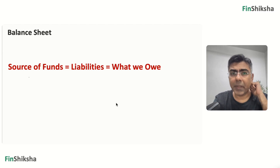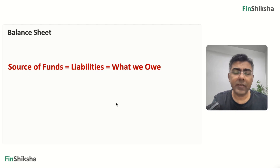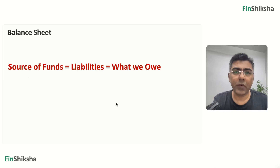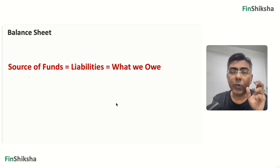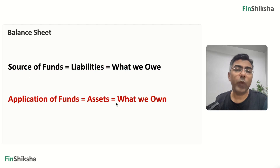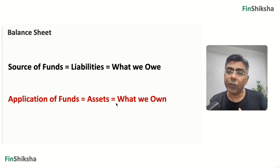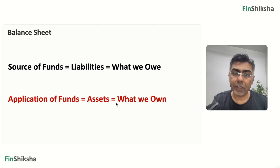The two sides of the balance sheet are typically liabilities and assets. Liabilities are where people — equity holders and debt holders — have given us money, which we owe to them and are supposed to return at some point. That's what we call sources of funds. These sources of funds are used in business-generating assets — that's the application of funds, what we own. So liabilities equal assets, and that's why this is a balance sheet.